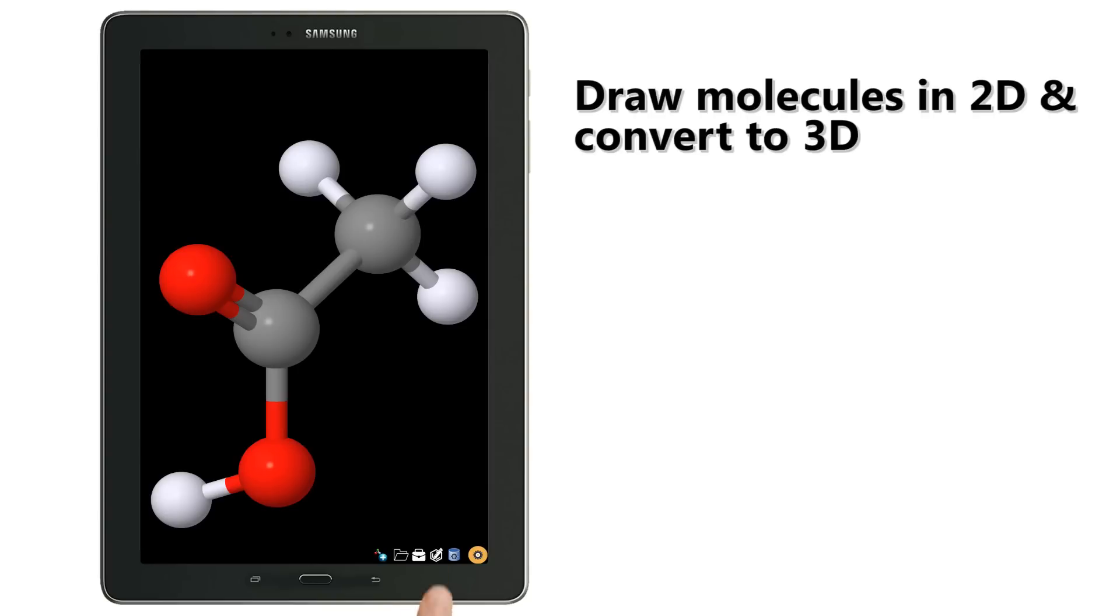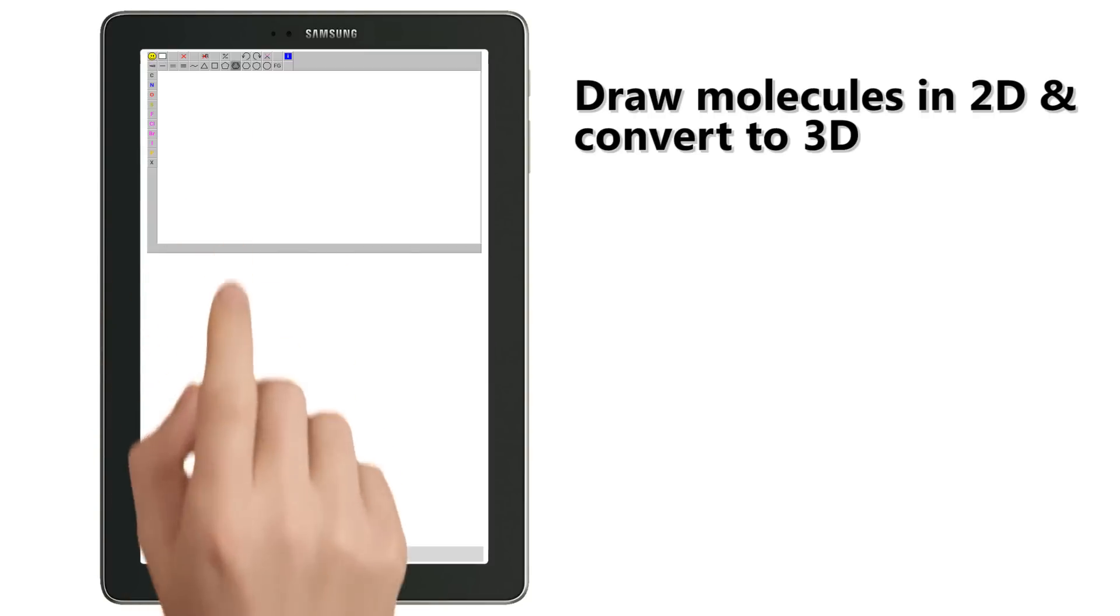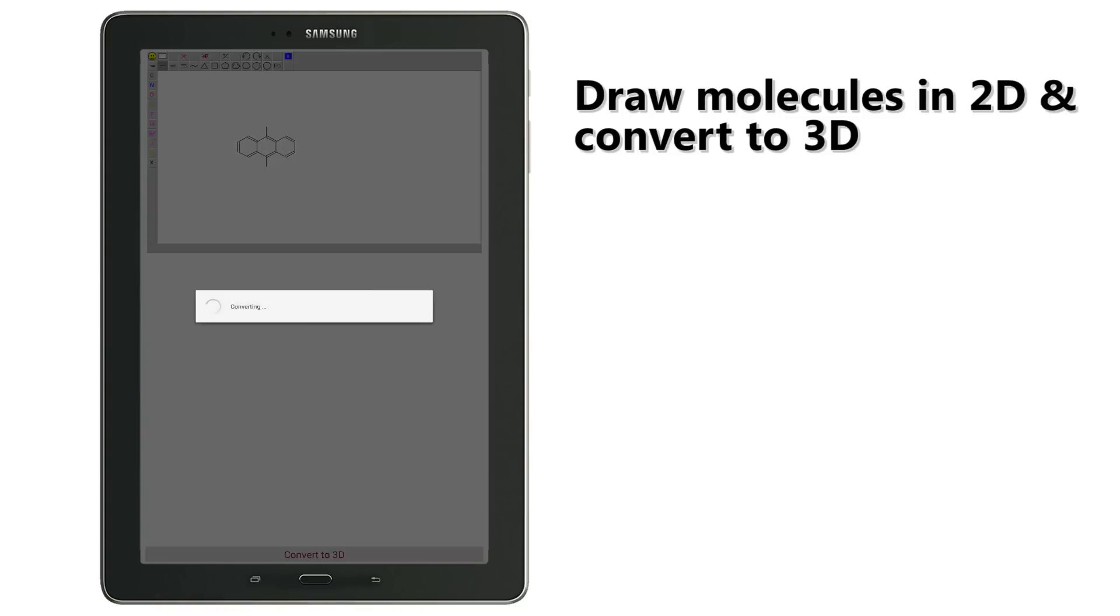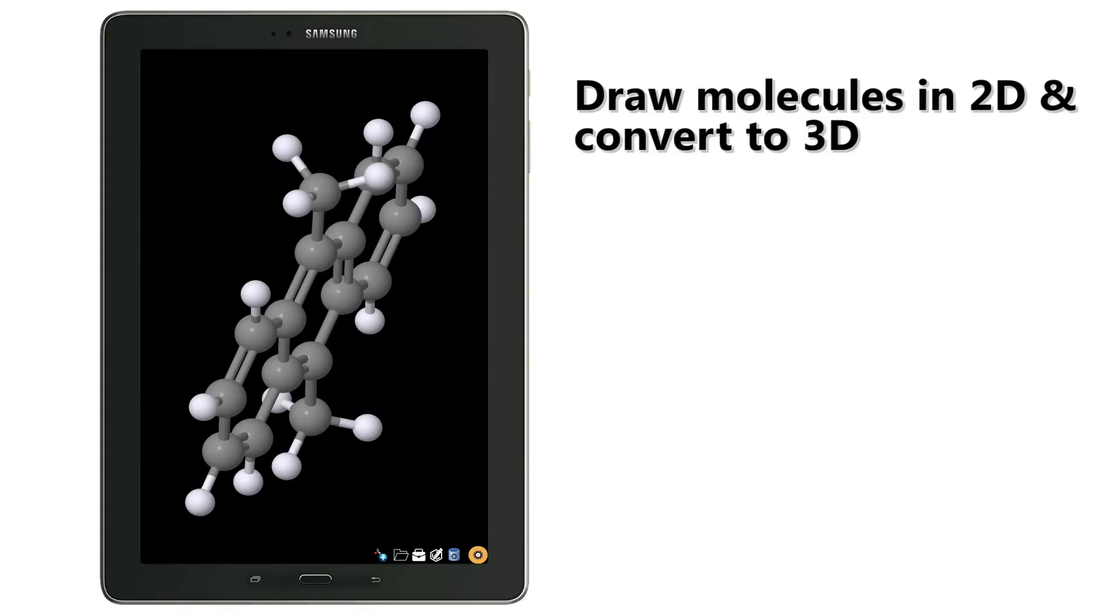For complex multiple ring molecules it is much easier to use the 2D draw than 3D. Here's an example. Click convert to 3D to have the 2D drawing converted to the respective 3D structure.